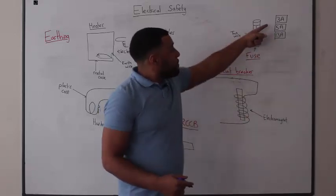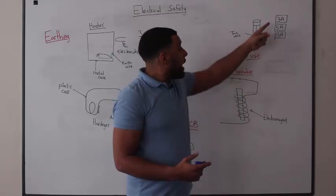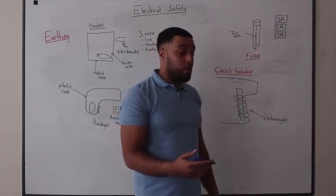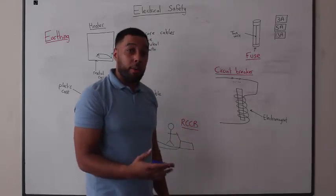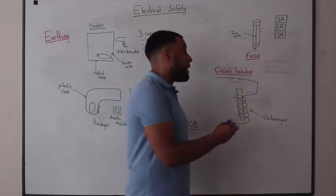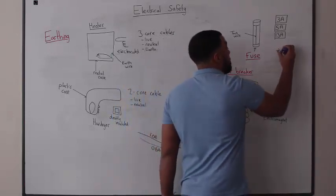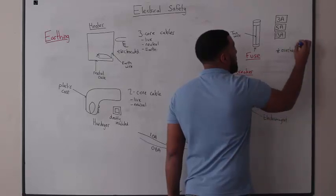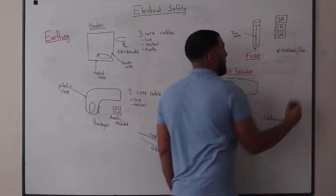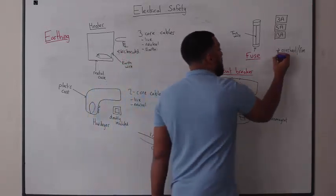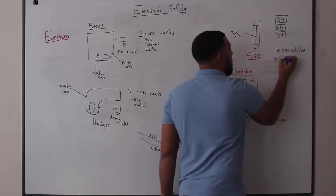What that means is that the fuse will safely allow 3 amps, 5 amps, or 13 amps of current to flow through it without it actually melting. If too much current flows through an appliance, it could cause it to overheat and catch fire. If the fuse that we use for the appliance is too low, the fuse would just keep blowing.